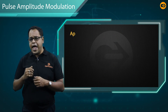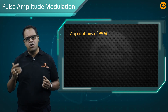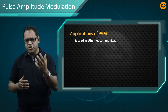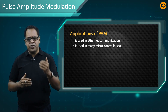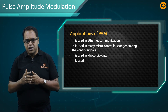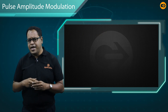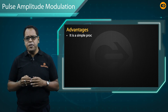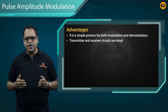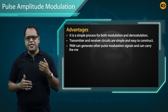PAM has several applications. It is used in Ethernet communication, in many microcontrollers for generating control signals, in photo biology, and as an electronic driver for LED lighting. The advantages of PAM include that it is a simple process for both modulation and demodulation, the transmitter and receiver circuits are simple and easy to construct, and PAM can generate other pulse modulation signals while carrying the message at the same time.